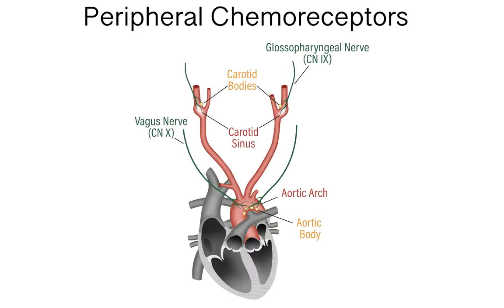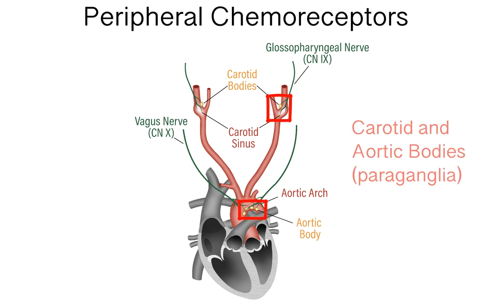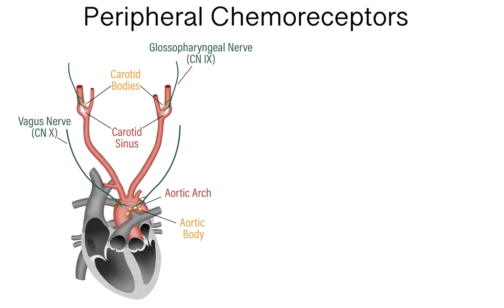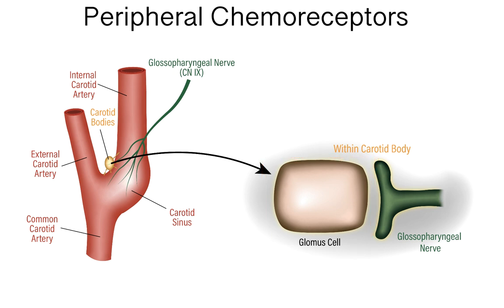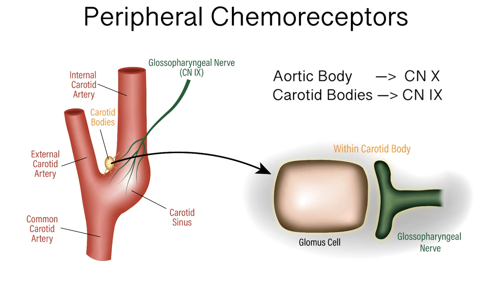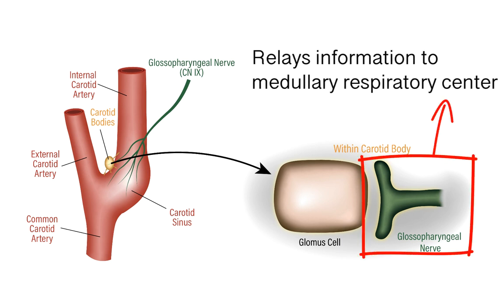First, let's discuss the peripheral chemoreceptors. Peripheral chemoreceptors are located in the carotid and aortic bodies, which are paraganglia with microvascular components. The cells principally responsible for detecting blood gas composition are called glomus cells, which are specialized neuronal-like cells capable of firing action potentials and releasing neurotransmitter. Afferent fibers from either the vagus nerve (cranial nerve 10) or the glossopharyngeal nerve (cranial nerve 9) relay information from the glomus cells to the medullary respiratory center.